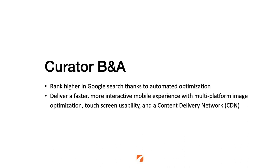Curator B&A helps you rank higher in Google's image search by automating some of the most difficult tasks of technical optimization, allowing your team to focus on the quick upload rather than carefully crafting things like titles and alternative descriptions for your images. It also delivers a faster and more interactive experience for mobile users by automatically optimizing versions of the images for standard smartphones and those iPhones with twice as much picture density, ensuring each user gets not only the best image quality but the fastest copy of the image.